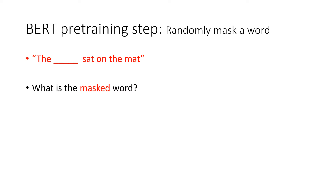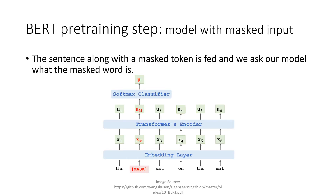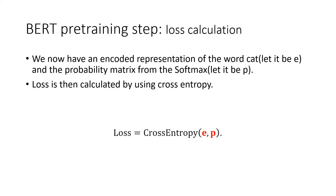In pre-training for BERT, we randomly mask a word and then ask the transformer: what is the masked word? The sentence along with a masked token is fed into our model. As you can see in the picture, the word 'cat' has been masked. We use a softmax classifier to classify the vector to a class. We have an encoded representation of the word 'cat,' let it correspond to E, and a probability matrix from a softmax, let it correspond to P. Loss is then calculated using categorical cross entropy, where loss equals cross entropy of P(E) over P.